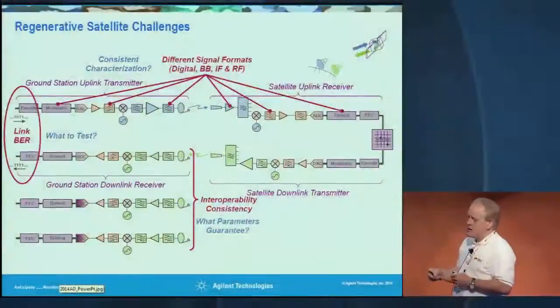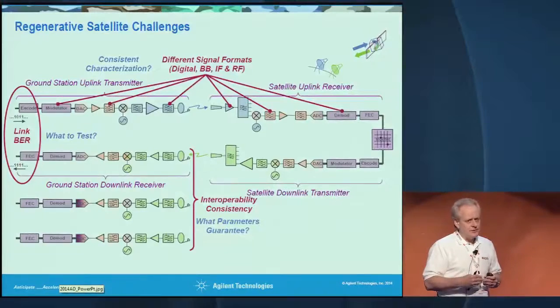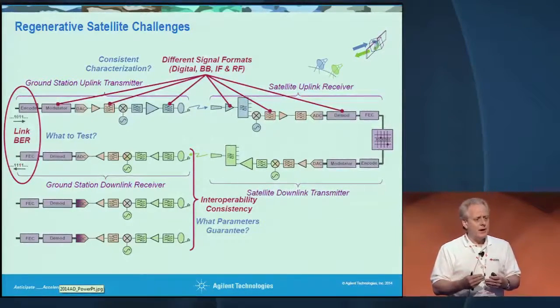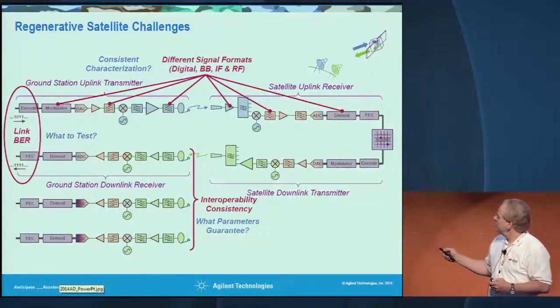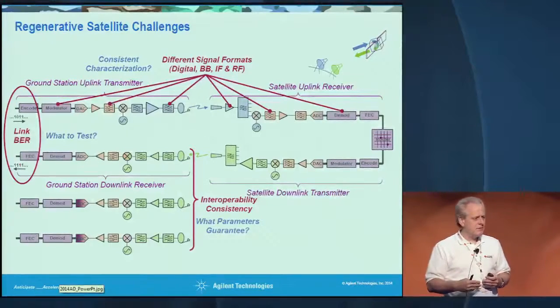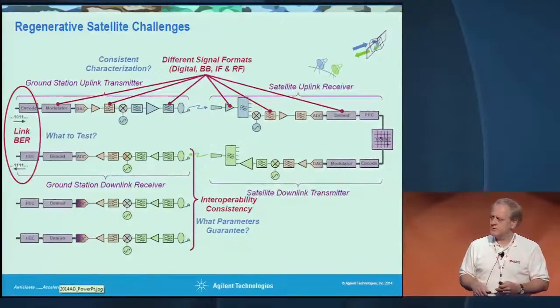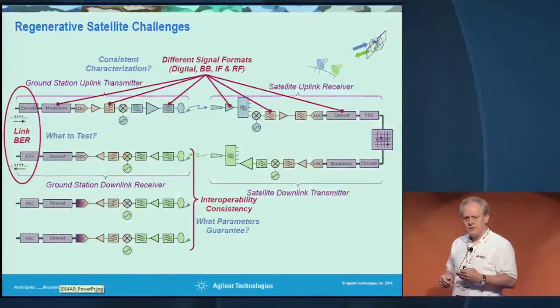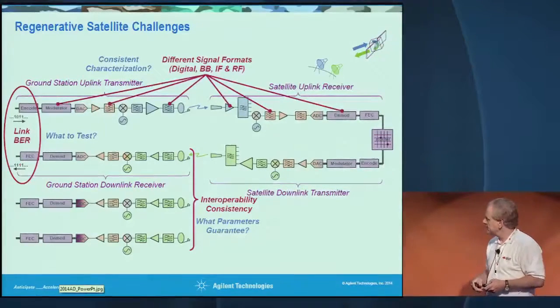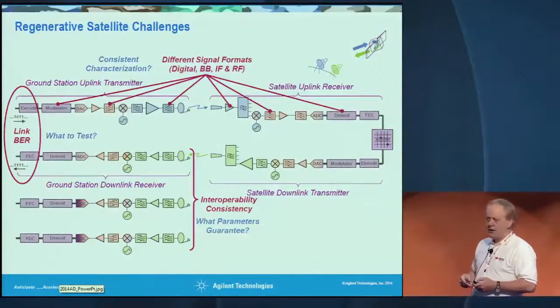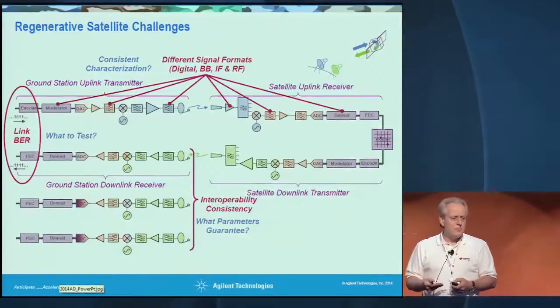With this new capability, where you may previously have been measuring frequency response, flatness, ripple, and group delay, you're now measuring different quantities — error vector magnitude, bit error rate — and working with more sophisticated block diagrams, actually treating the satellite itself as both a receiver and a transmitter. This calls for a new understanding of what measurements to make.